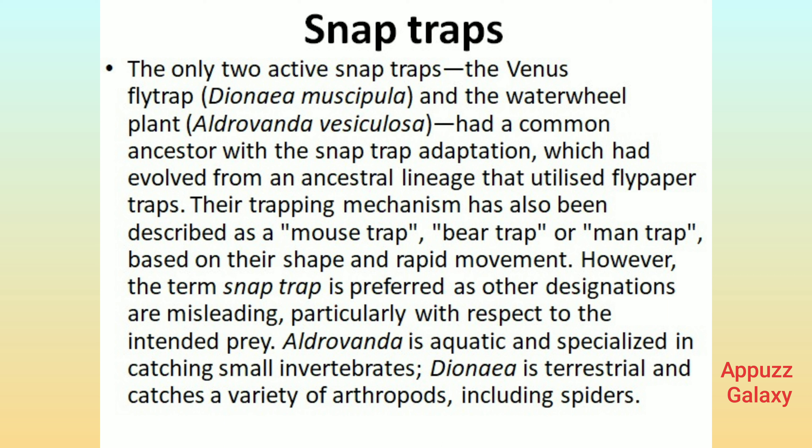The only two active snap traps — the Venus flytrap and the waterwheel plant — had a common ancestor with the snap trap adaptation, which had evolved from an ancestral lineage that utilized flypaper traps. Their trapping mechanism has also been described as a mousetrap, bear trap, or man trap, based on their shape and rapid movement. However, the term snap trap is preferred as other designations are misleading, particularly with respect to the intended prey.